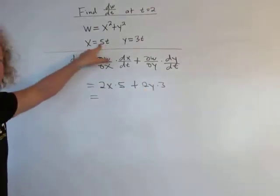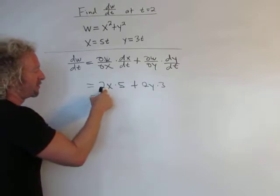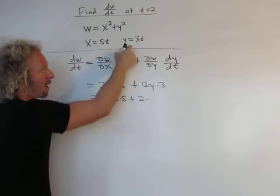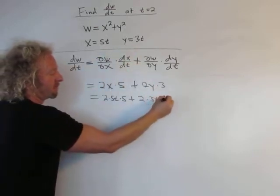Now you can plug everything in. x is 5t, so you get 2 times 5t times 5, plus, and then 2. And then y is 3t, 3t, times 3.